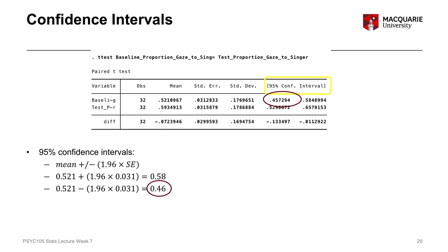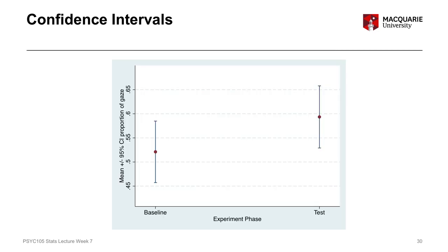Confidence intervals can be really useful when you're interpreting data and also when reporting data, because they give the reader an idea of how much variability there is around the mean, and therefore where we think the population parameter is going to lie. You can also graph your data using confidence intervals. This graph shows our two variables — the proportion of gaze in the baseline condition and in the test condition. The red dots in the middle are our mean scores, and the intervals around these are our 95% confidence intervals. You can get a sense of the amount of variability in each group, but also how distinct the difference between the two groups is.